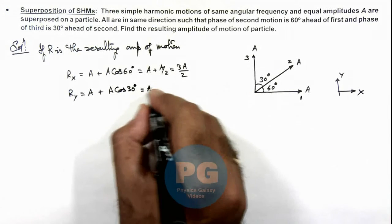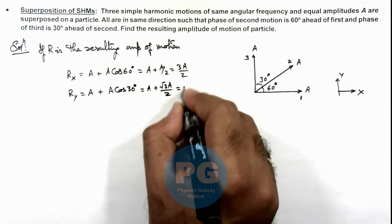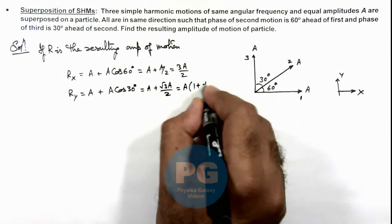So this will be A plus root 3 A by 2, which gives us A times 1 plus root 3 by 2.